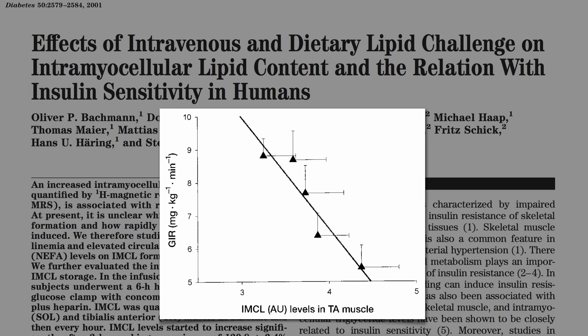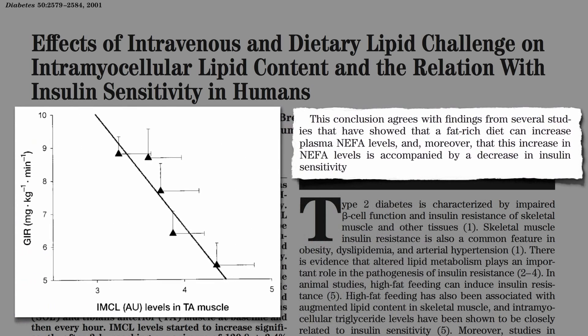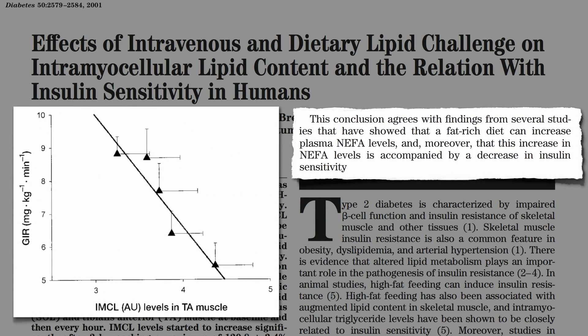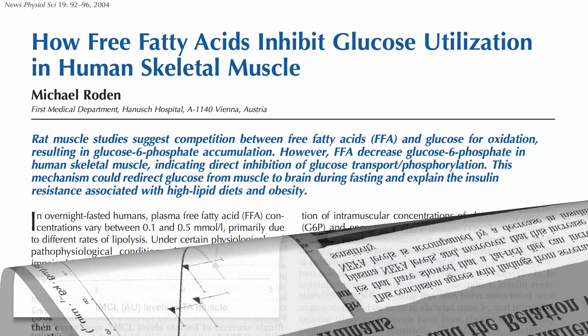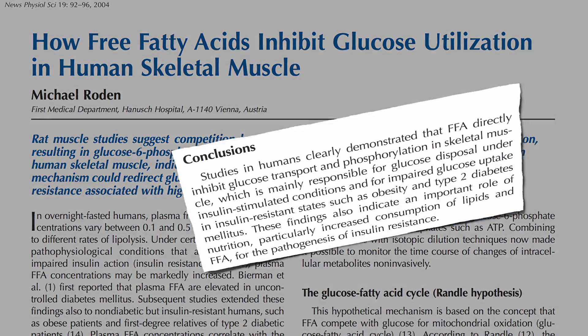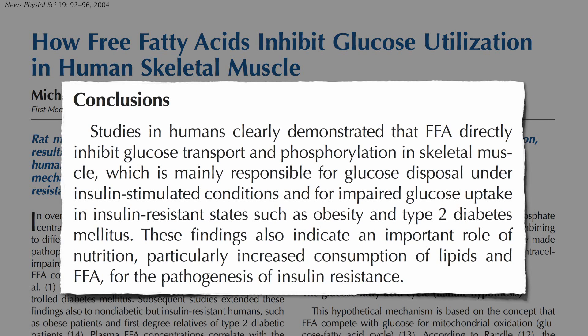It doesn't take years for this to happen. Just hours after fatty foods go into our mouths, our body has problems using insulin. A fat-rich diet can increase fat in the blood, and this increase is accompanied by a decrease in insulin sensitivity. Studies clearly demonstrate that the fat in the blood directly inhibits blood sugar transport and usage in our muscles, which are responsible for clearing about 85% of the sugar out of our blood. These findings indicate an important role of nutrition — particularly increased consumption of fat — for the development of insulin resistance.